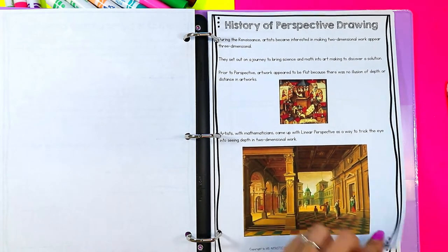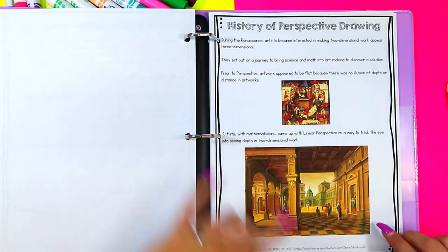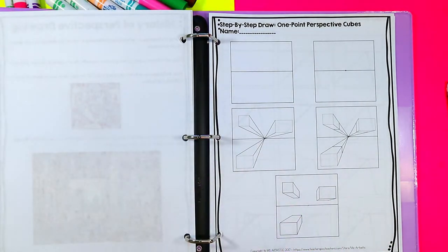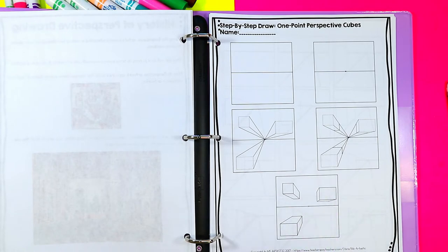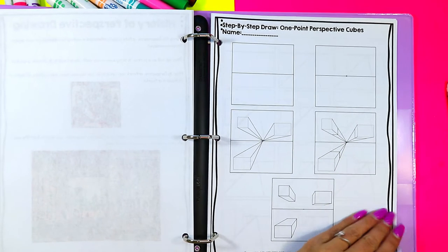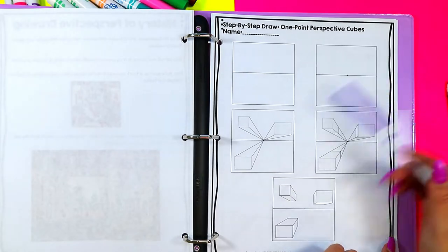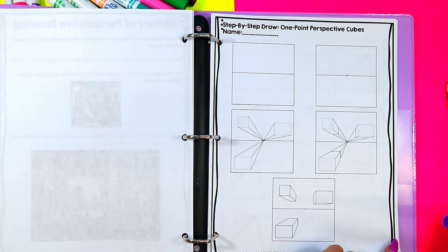Which was, of course, perspective art. So you can see the difference and show the students. It comes with a step by step how to do one point perspective cubes, and then also provides a page for them to create their own one point perspective cube drawing.